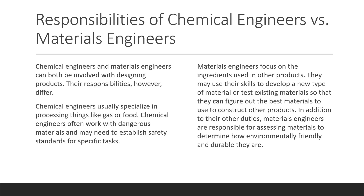Chemical engineers and materials engineers can both be involved with designing products, though their responsibilities tend to differ. Chemical engineers usually specialize in processing things like gas or food, and often work with dangerous materials, may needing to establish safety standards for specific tasks. Materials engineers focus on the ingredients used in other products, and may develop new types of materials or test existing ones to figure out the best materials to construct other products.